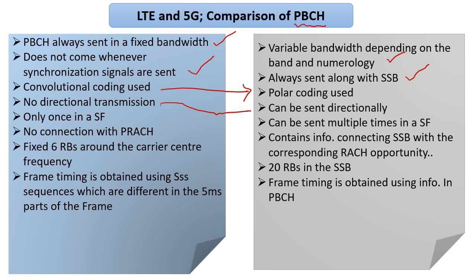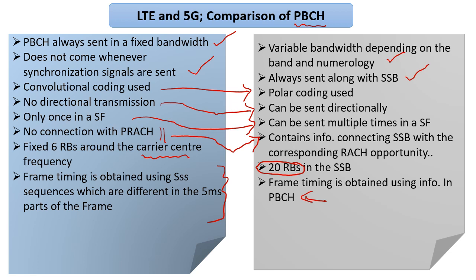In LTE, there is no concept of directionality for PBCH. Since 5G NR starts with directional SSB possibilities, PBCH has directionality and many beams can be sent within a time equivalent to a subframe. In LTE, there is no connection between PRACH and PBCH. In 5G NR, there is a strong connection because PBCH contains certain details which are very important in the RACH process. Also, in LTE, PBCH was always tied to the center frequency position, whereas in 5G NR, because it comes with SSBs, there is no such fixed tying. The number of RBs is also different — 20 RBs instead of 6. Frame timing, which was obtained using secondary sync signals in LTE, is instead obtained from information given in the PBCH in 5G NR.